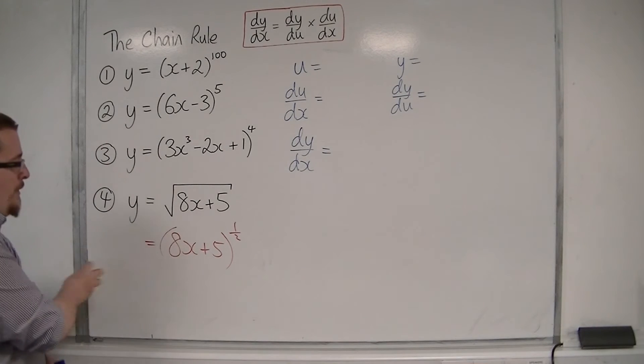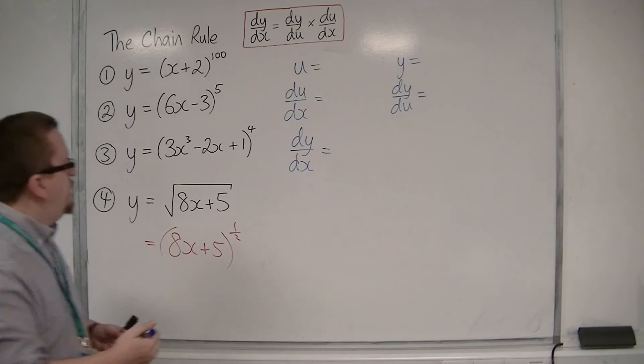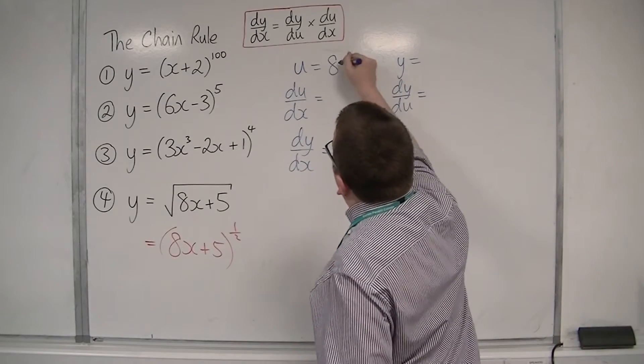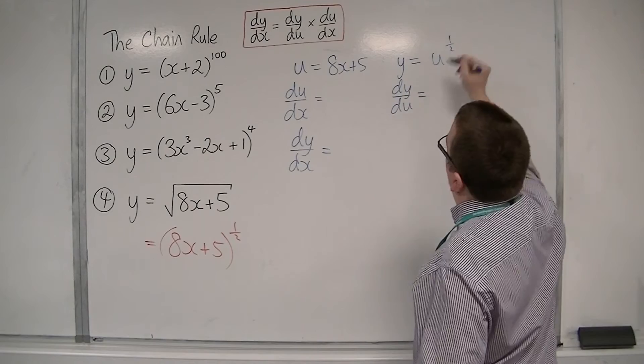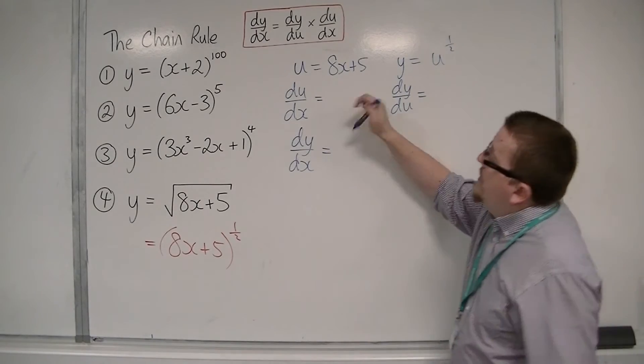Think about that 8 coming outside, the derivative of what's inside, the half coming down to the front, and taking 1 off the power. So u is 8x plus 5, so y is u to the power of a half. du by dx is 8.